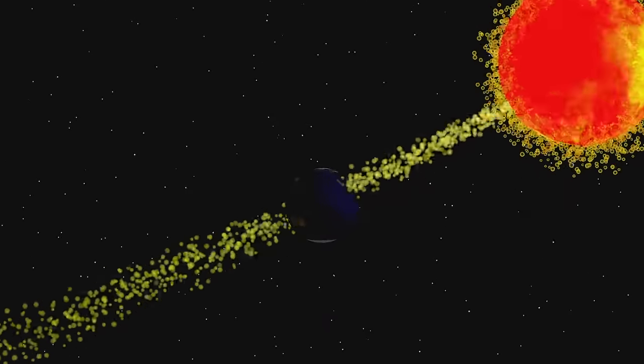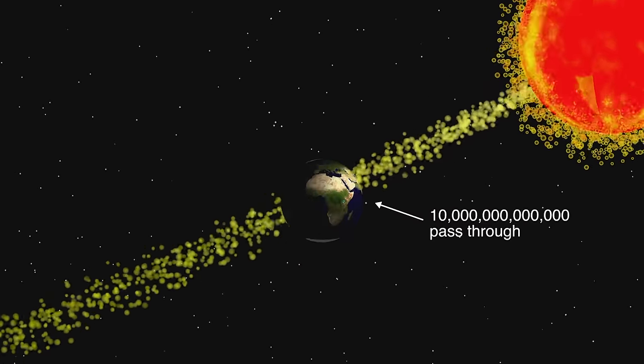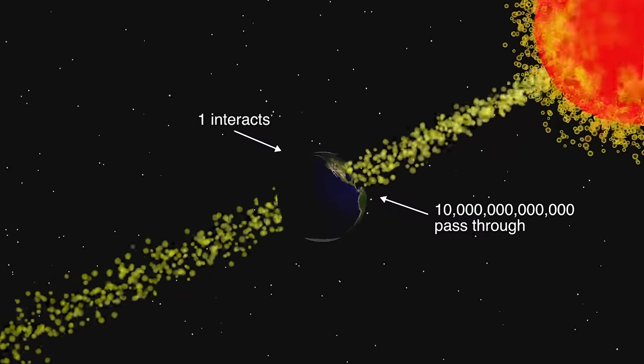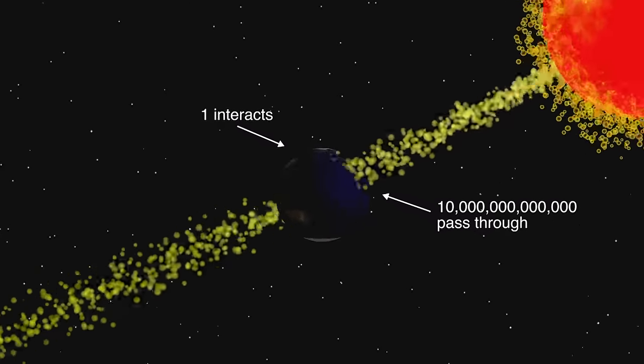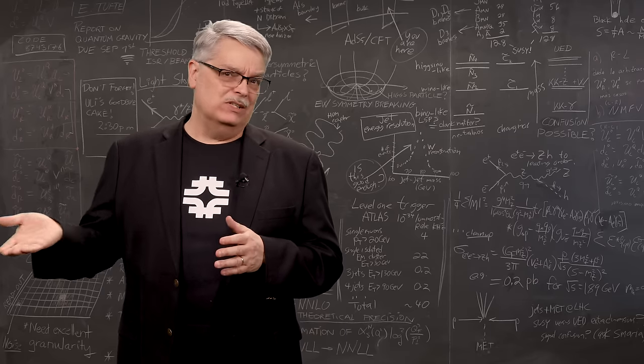In very rough numbers, for every 10 trillion neutrinos hitting the surface of the earth and passing through the thickest part, one of them interacts somewhere in the earth, and the rest pass through unscathed. Now our detectors are big, but they aren't as big as the earth.